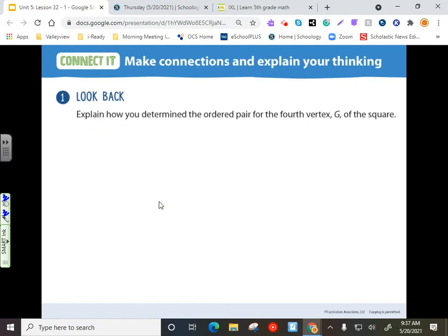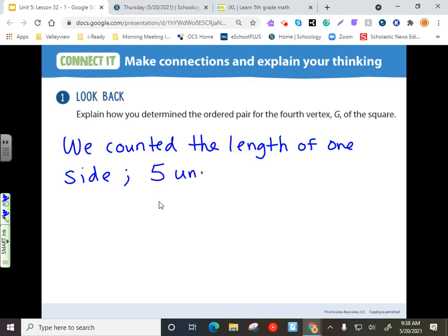Let's continue. Not too difficult. For one, explain how you determine the ordered pair for the fourth vertex, G, of the square. We did this together. We counted the length of one side, and that was five units. So, we knew we had to create a vertex point that kept that together with the five.